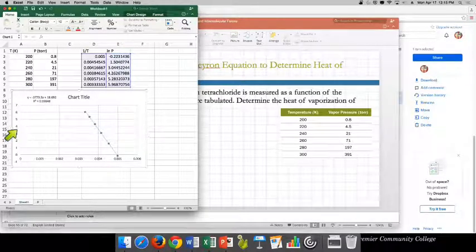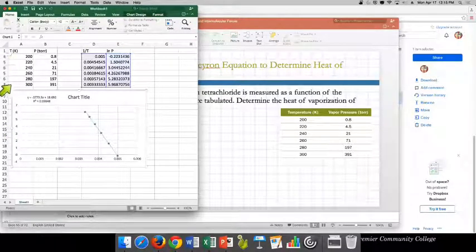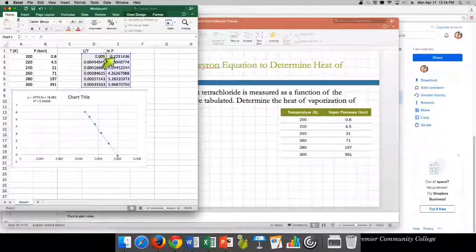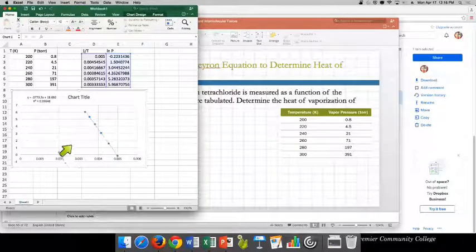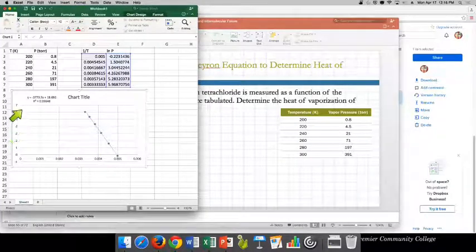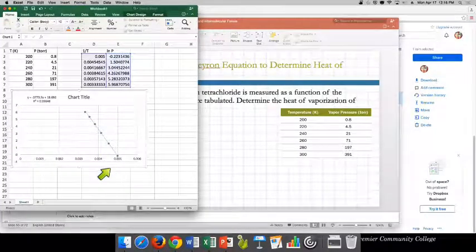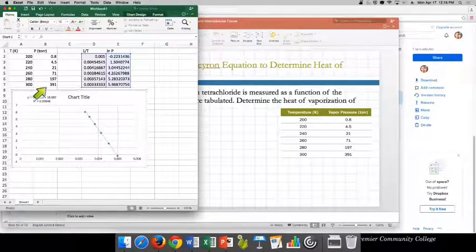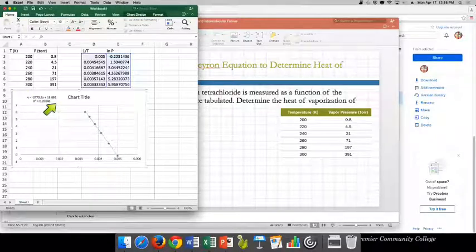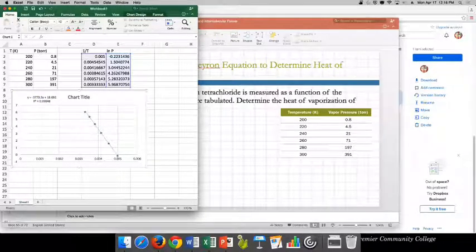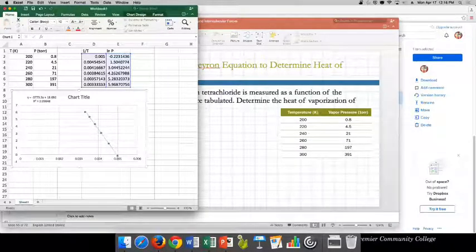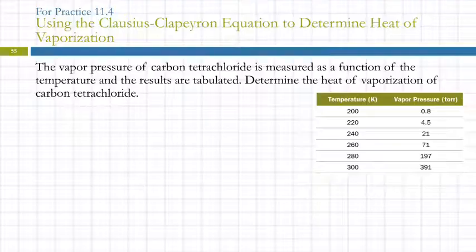So I opened up Excel and here I've got the temperature in Kelvin, the pressure in Torr, and then I did 1 over T and the natural log of P and I graphed that. I didn't put titles on here, but this is the natural log of P versus 1 over T. It's pretty linear and here's our equation. The slope here is what's important. Now the question is how can I write that down and not lose it?